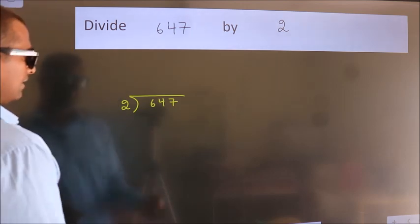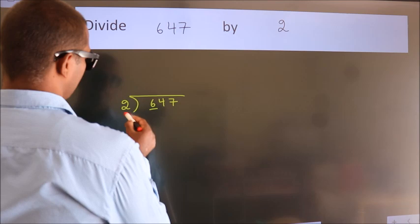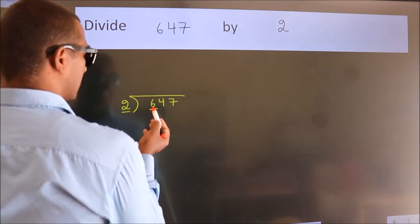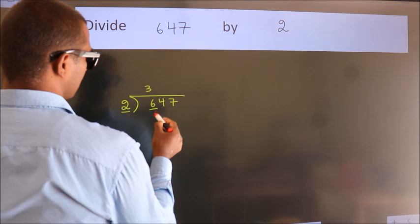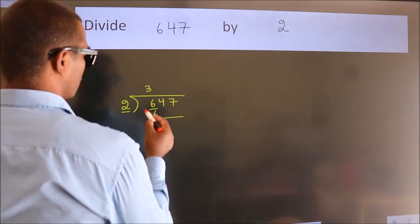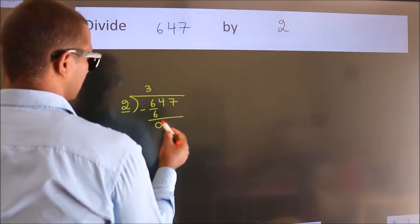Next, here we have 6, here 2. When do we get 6? In 2 table, 2 threes, 6. Now, we should subtract, we get 0.